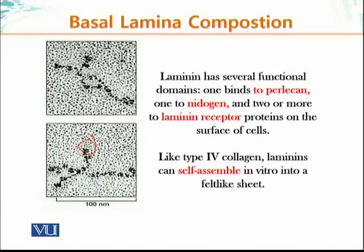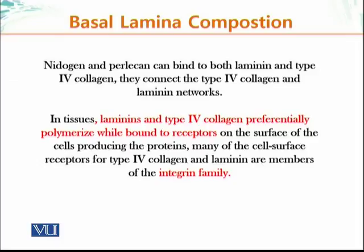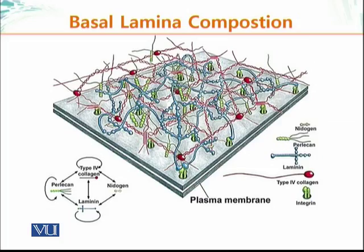Nidogen and perlecan can bind both laminin and type 4 collagen, connecting and reinforcing the interaction between the laminin and collagen type 4 networks. In tissue, laminin and type 4 collagen preferentially polymerize while bound to receptors on the surface of the cells producing the proteins, although they can also self-assemble in a test tube. Many of these cell receptors are members of the integrin family.